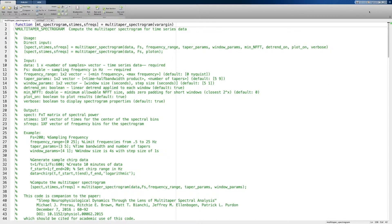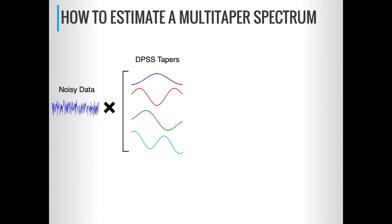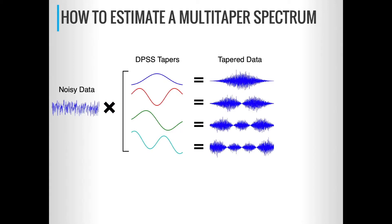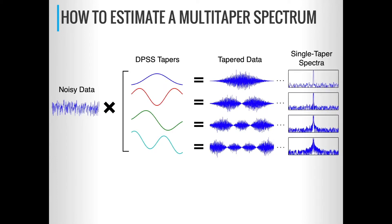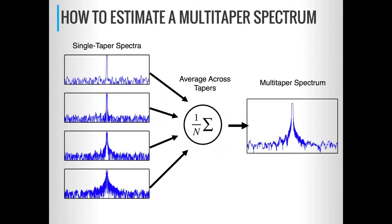Let's recap exactly how we make a multi-taper spectrogram. We first start with a noisy segment of time series data. We then create a set of DPSS tapers, which are shapes designed based on specifications related to the spectral properties that we wish to observe within the data. By multiplying each of these tapers in turn to the noisy data, we get a series of tapered data window segments, and for each of those we can compute a single taper spectrum. By averaging all of those spectra together, we reduce the variance inherent in the estimates and create a multi-taper spectrum.